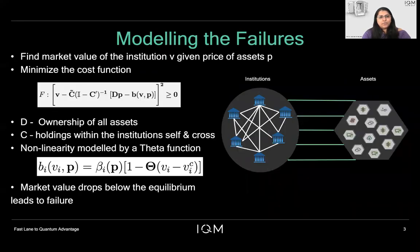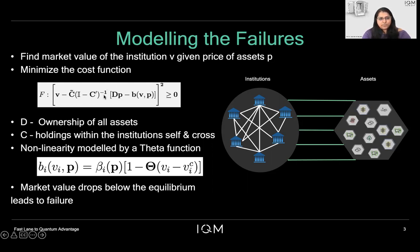So let me give you the model that we would like to study. Here is a network of institutions which co-own many of the assets. These assets could be different commodities. Given the price of the assets P, we would like to understand what is the market value of the institution V. The problem is reformulated in terms of a minimization problem involving different aspects, which could be the ownership of the assets, how the holdings are distributed among these institutions, and additionally a non-linear theta function. So if the market value falls below a particular critical value, then the price of the assets change. In the presence of all these different terms, we would like to study the model.